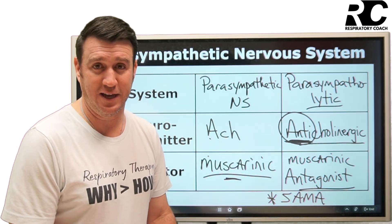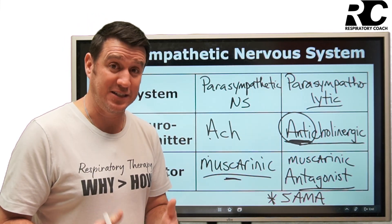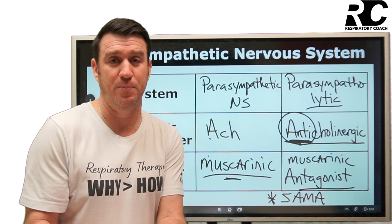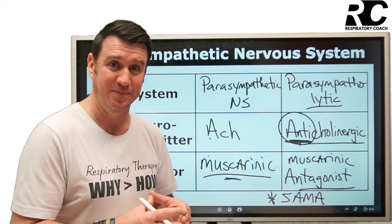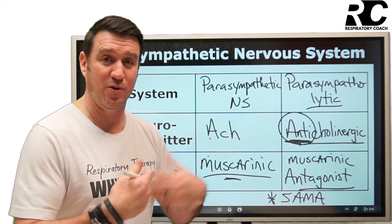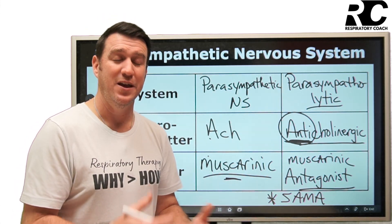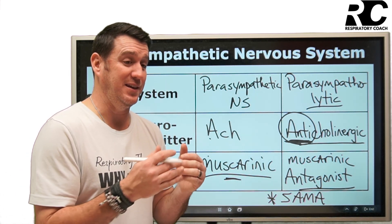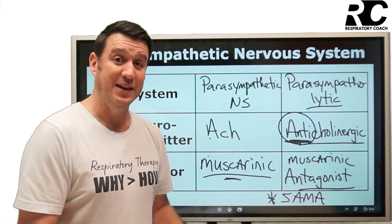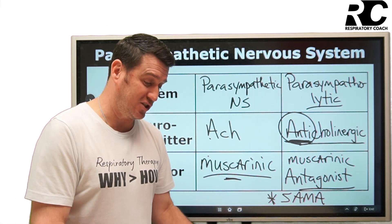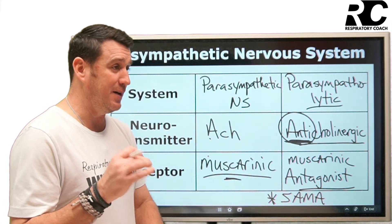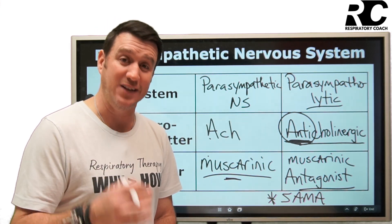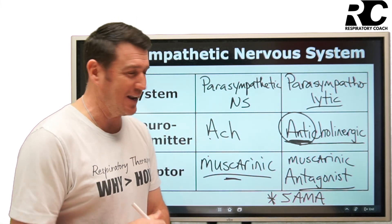We often give SAMAs in conjunction with SABAs — albuterol together with ipratropium bromide. Together they make Duoneb, a combination providing synergy: two drugs working together toward bronchodilation through different mechanisms. The SAMA — ipratropium bromide — serves as an add-on to the SABA. Now you know the difference: albuterol stimulates bronchodilation via beta-2 receptors, while ipratropium bromide blocks bronchoconstriction via muscarinic receptor antagonism.